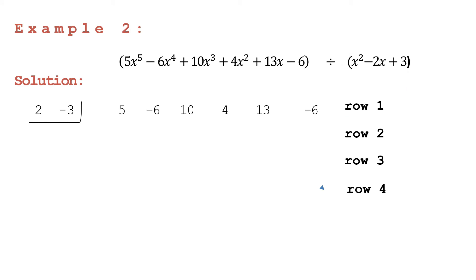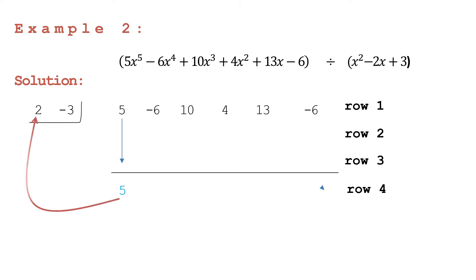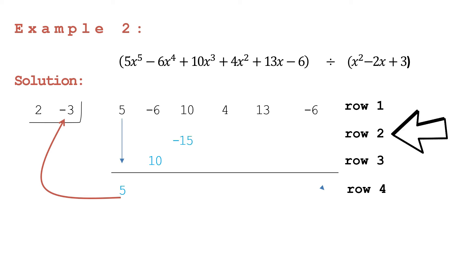We will be using two operations repeatedly — multiplication and addition. Bring down the leading coefficient: 5. Then multiply twice because we have two divisors: 5 times 2 is equal to positive 10; write positive 10 in row three, column two. 5 times negative 3 is equal to negative 15; write negative 15 in row two, third column.